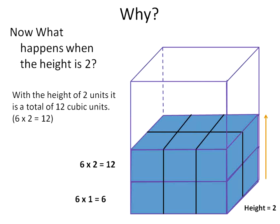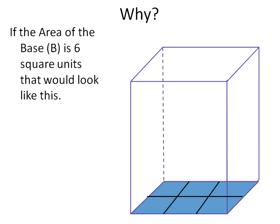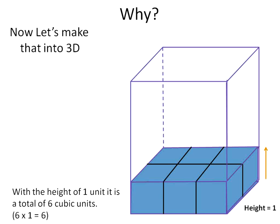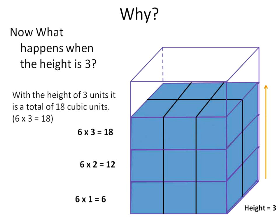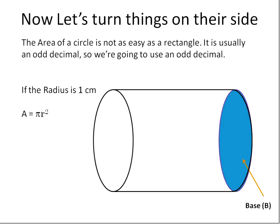And that's how volume works. We're basically stacking. We start at the area of the base and we stack. If the height's one, we multiply it times one and then it becomes cubes instead of squares. Now it's two layers of cubes, three layers of cubes, four layers of cubes.